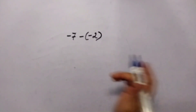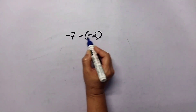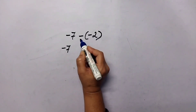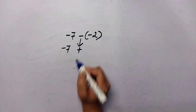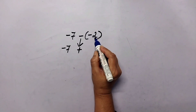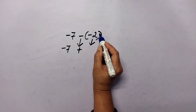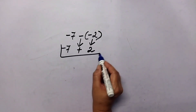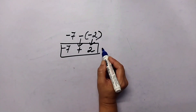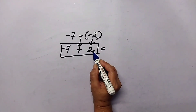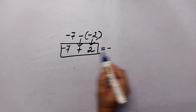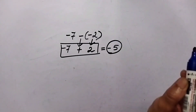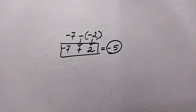Let us take another example: negative seven minus negative two. Keep negative seven the same, change subtraction to addition, and the additive inverse of negative two becomes positive two. Now we have the addition fact negative seven plus positive two. Whose absolute value is more? Negative, and how much more? Five. So the result is negative five.